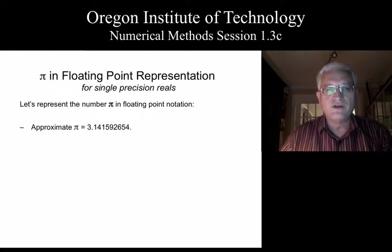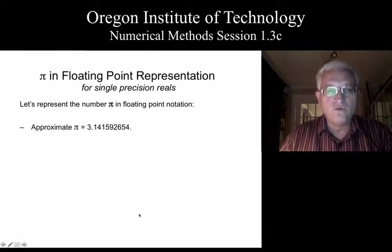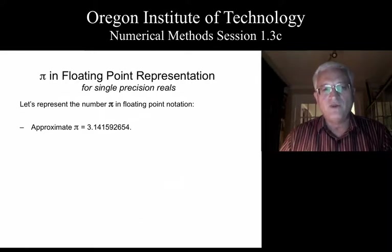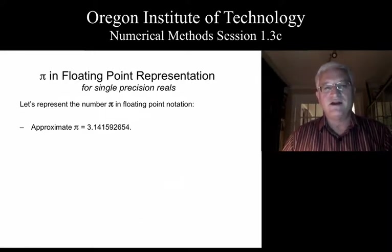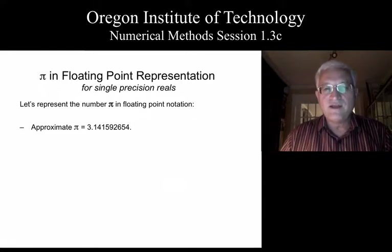Most of your calculators will return 3.141592654. Now, we know that pi is irrational, and that is not exactly equal to pi.